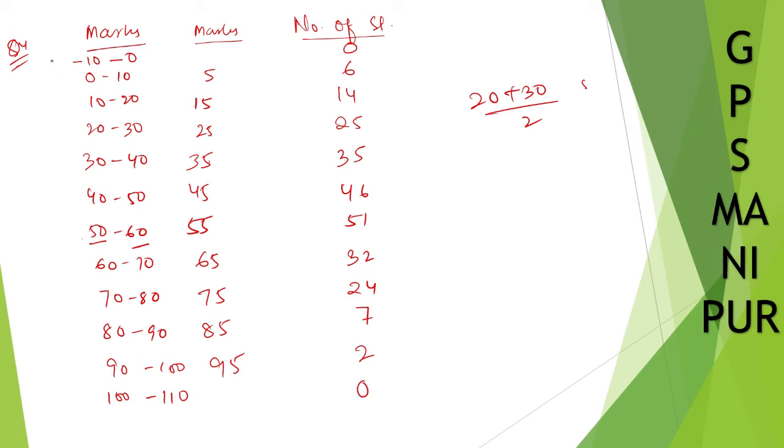We are taking two class. In the beginning, we are taking minus 10 to 0 and at the end, we are taking 100 to 110 where the frequency is 0. Like while drawing histogram, we have drawn that like while making frequency in the histogram plot, we have taken 0 point, right? Same thing here.